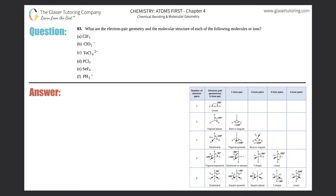Number 83: what are the electron pair geometry and the molecular formula of each of the following molecules or ions? We have parts a through f. We've done two problems just like this, so we should know the basics of how to get an electron pair geometry and molecular structure. The basis is that each one comes from knowing how to draw the correct Lewis structure. If you're unfamiliar with how to draw Lewis structures, go back to question 40 in this chapter.